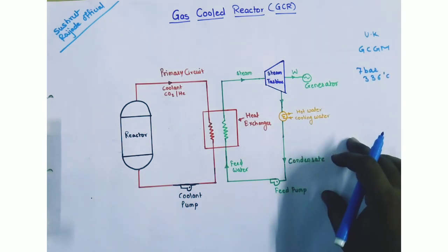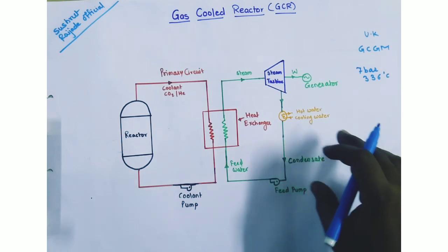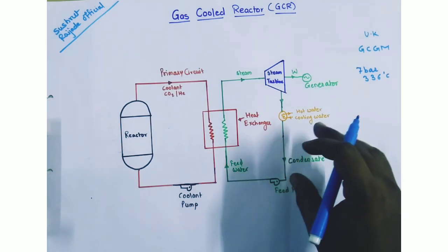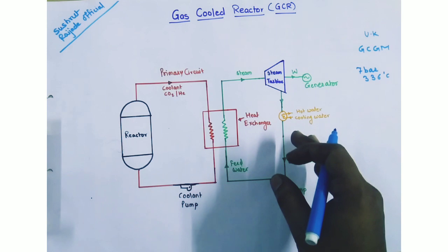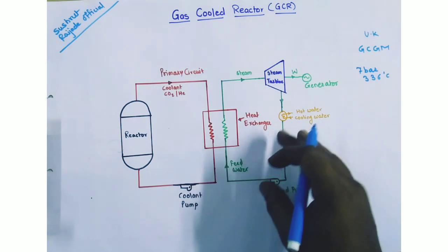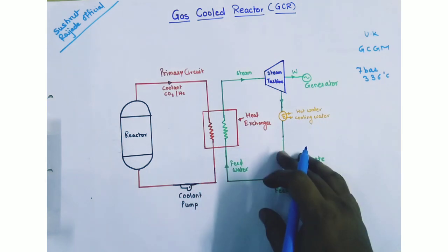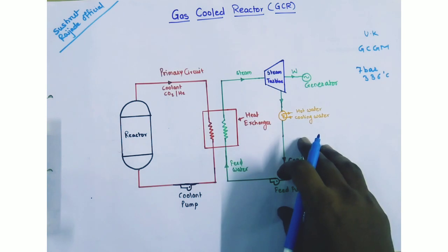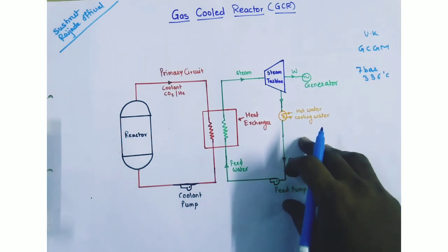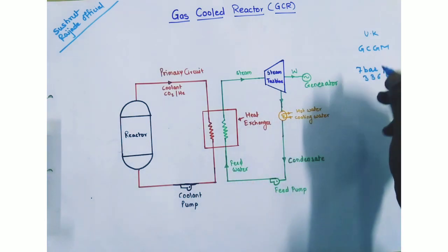Another gas cooled reactor was developed in USA. It uses helium as a coolant and graphite as a moderator. It is called a high temperature gas cooled reactor, that is HTGC.